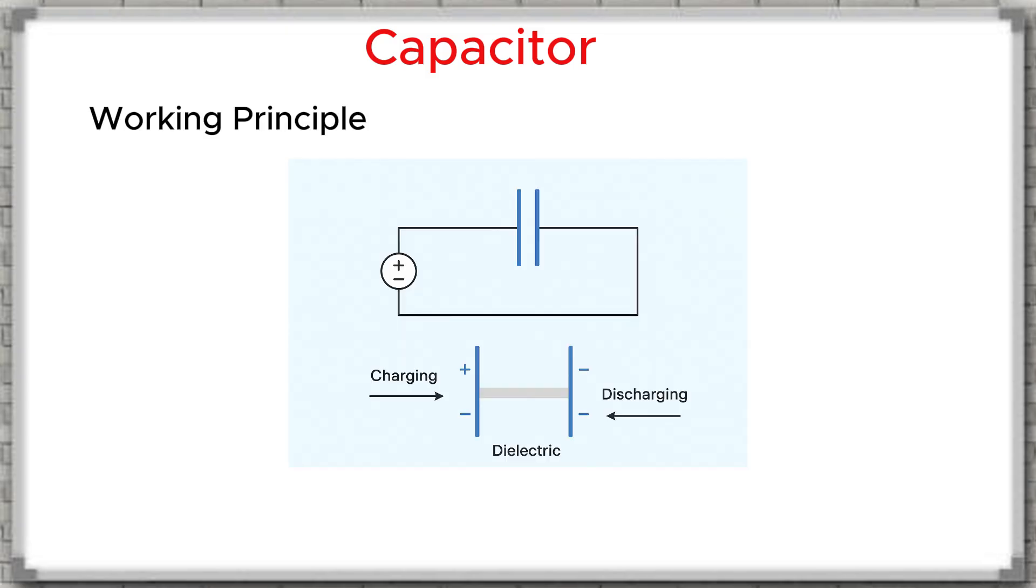Working principle: When we apply a voltage across the two terminals of a capacitor, opposite charges accumulate on each plate. The dielectric layer in between blocks direct current, DC, from passing through, but allows alternating current, AC, or pulse signals to pass, depending on the frequency. The energy stored inside the capacitor will be released when the circuit requires it.